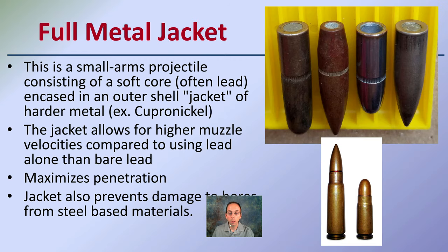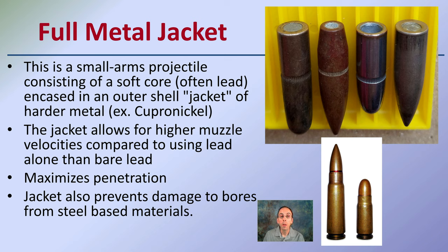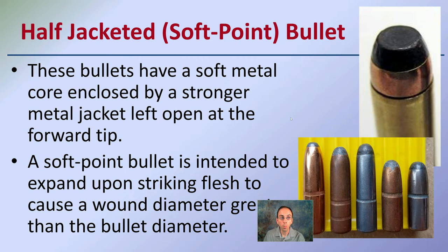Full metal jacketed bullets, as the name implies, are completely encased in metal. This is a small arms projectile consisting of a soft core — often lead — encased in an outer shell or jacket of harder material. You can see they're made of lead in the center and fully metal jacketed on the outside. This jacket allows for higher muzzle velocities compared to lead alone because it's a harder substance, maximizing penetration. The jacket also prevents damage to the bore from steel-based materials.